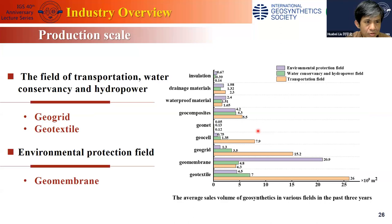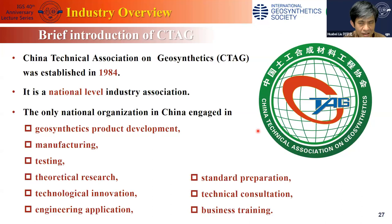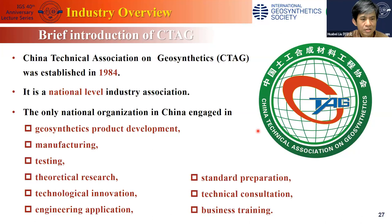In the field of transportation, water conservation, and hydropower, geogrids and geotextiles are widely used. In the field of environmental protection, geomembranes are widely used. China has set up the China Technical Association on Geosynthetics (CTAG) to promote the manufacturing and application of geosynthetics. This organization was established in 1984 — one year after the establishment of IGS. It is a national level industry association and the only national organization in China engaged in geosynthetic product development, manufacturing, testing, theoretical research, standard preparation, technological innovation, technical consultation, engineering application, and business training.